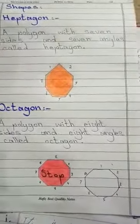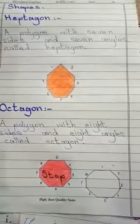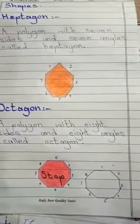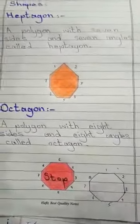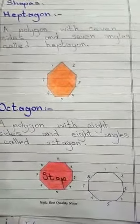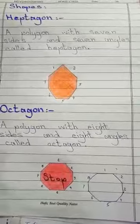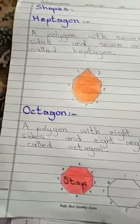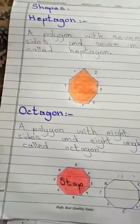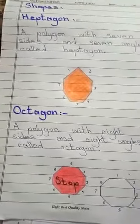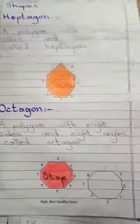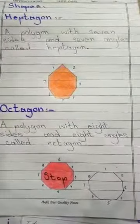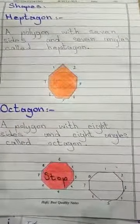How many sides does it have? It has eight sides and eight corners. So what is the meaning of stop? Stop means you have to stop there.